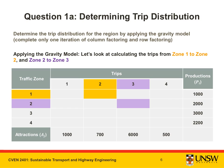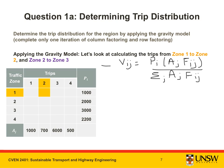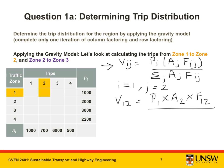We can now start calculating trips using the gravity model equation. We will work through calculations for trips from zone 1 to zone 2, and zone 2 to zone 3. The gravity model formula is shown here. In calculating the trips from zone 1 to zone 2, i is equal to 1 and j is equal to 2. The number of trips between zones 1 and 2, T12, is therefore P1 times A2 times F12, divided by the sum of total attractions to zone j multiplied by the friction factor from zone 1 to zone j, for each j. We can then expand the denominator.